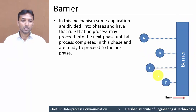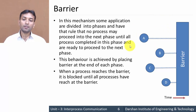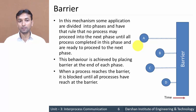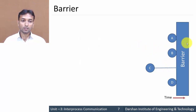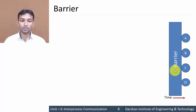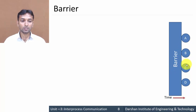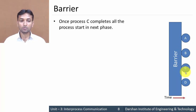All processes execute in the first phase. Whenever all processes complete execution in the first phase, they are allowed to execute in the second phase. When a process reaches the barrier it is blocked until all processes have reached that barrier. If three processes — A, B, and D — reach the barrier but C has not, then A, B, and D cannot proceed to the next phase until C also reaches the barrier. Once C arrives, all processes start execution in the next phase. This is known as a barrier.